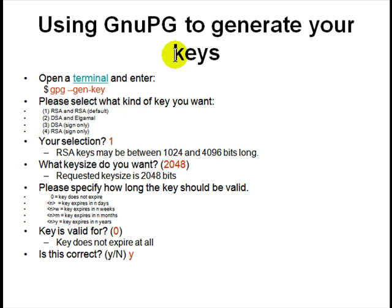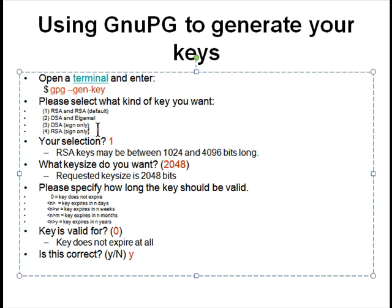Let's look at the details of generating a key. You open a terminal and say 'generate key.' You have many options: RSA, DSA, ELGAMAL — all these algorithms are available. DSA and RSA are used for signing only. You pick one of the options and choose how big a key you want — it can be 1000-bit or up to 4000-bit.